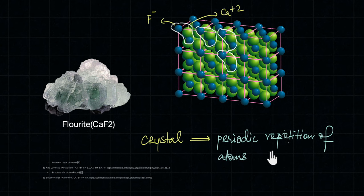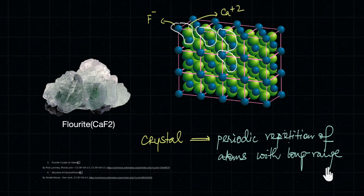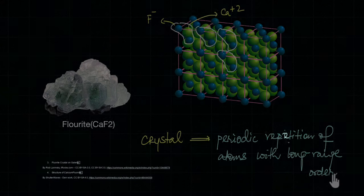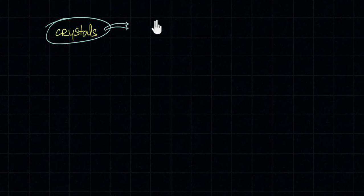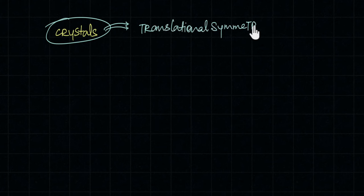Just like before, whatever way you look in the crystal you'll find the exact same pattern forming everywhere. So a crystal can be defined as the periodic repetition of atoms — or groups of atoms — with long range order. Because all crystals have long range order, they have the same pattern everywhere, so all crystals also have translational symmetry.